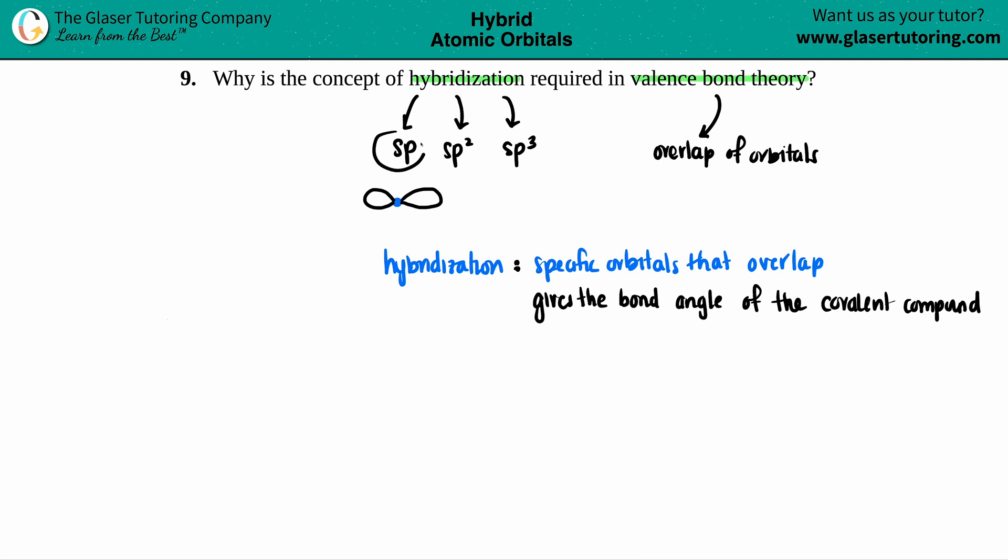because it's these specific hybridizations that will tell us what bond angle these are trying to bond with. So for example, if you're an sp and you have one overlap that's going this way and one overlap that's going this way, the angle between these two is 180 degrees. Sp2 would be 120, and the sp3 is at 109.5 because that's the tetrahedral.